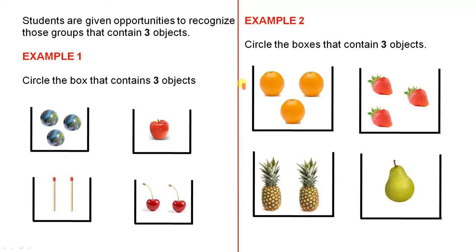Students are given opportunities to recognise those groups that contain 3 objects. So a simple example would be, circle the box that contains 3 objects. Now you have box which is singular, so hopefully the students will see that there's only one box, but after looking at the 4 boxes, they would certainly circle this one.